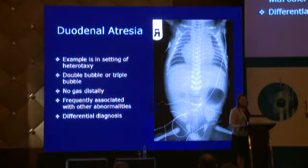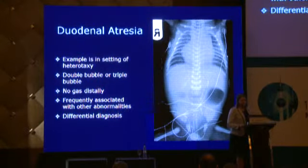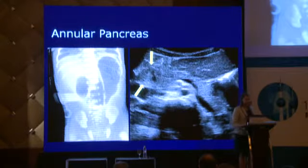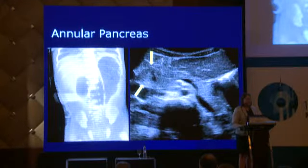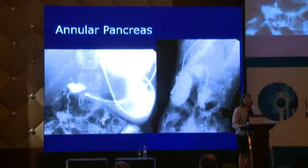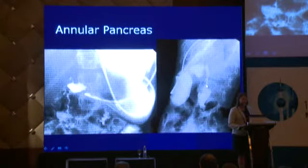In this case of duodenal atresia there's more going on than just the atresia — this child had heterotaxy, so remember that things frequently go together and if you find one abnormality, search for another. Here you see the double bubble configuration: large gastric distension plus proximal duodenal distension, with the yellow arrows pointing to the pancreas encircling the duodenum — annular pancreas. This child had some feeding issues but wasn't diagnosed right away, and the subsequent upper GI showed a relatively apical-looking lesion confirmed as annular pancreas at surgery.